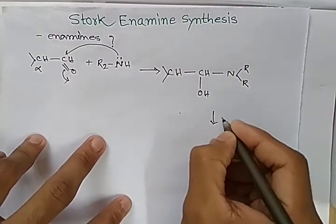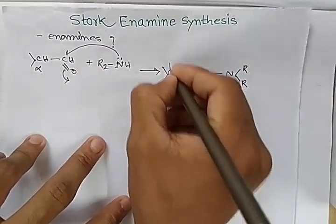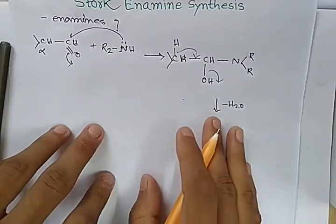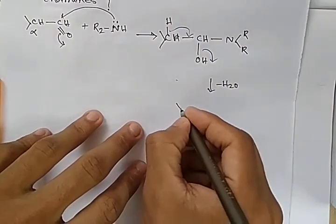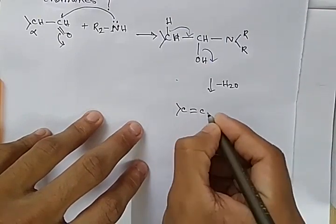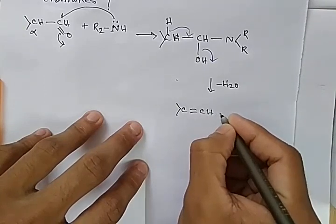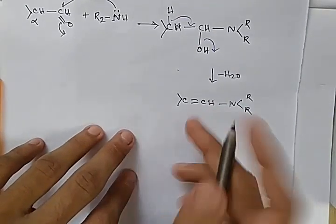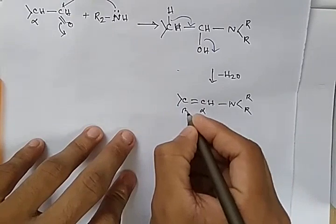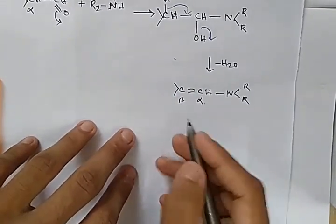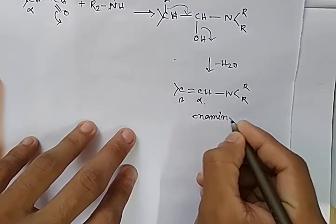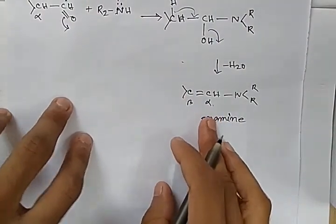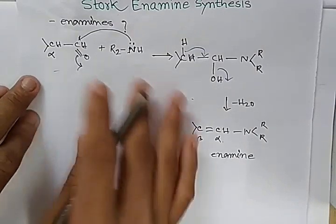After removing the water molecule, this falls here, and we get an alpha-beta unsaturated compound. Here it is alpha, here it is beta, so it is an alpha-beta unsaturated amine. This is an enamine.